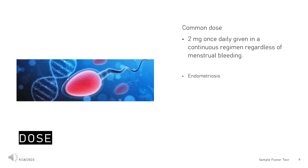Dose — Endometriosis. Adults: 2 mg once daily, given in a continuous regimen regardless of menstrual bleeding. Children aged 12 years and older (post-menarche): same as the adult dose.